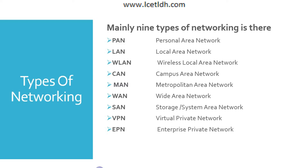Next we have the Wireless Local Area Network (WLAN), which functions like a LAN but makes use of wireless network technology such as Wi-Fi. Typically seen in the same types of applications as LANs, these networks don't require that devices rely on physical cables to connect — just as we connect our mobile phones to Wi-Fi at home without any wire.